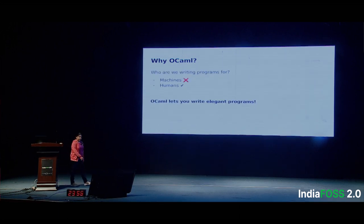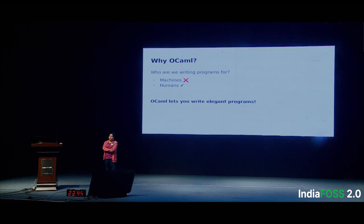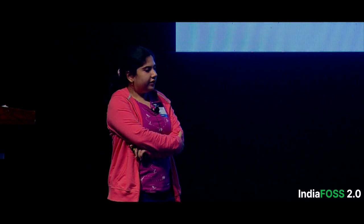Another question we should ask ourselves is: who are we writing programs for? We are certainly writing programs to be executed in machines, but there's also the element of reading programs. It is human beings — our fellow colleagues or peers — who are going to read the programs we write. We spend a lot of time optimizing programs for machines, but what about the human side? The advantage OCaml gives you is that it enables you to write elegant programs.